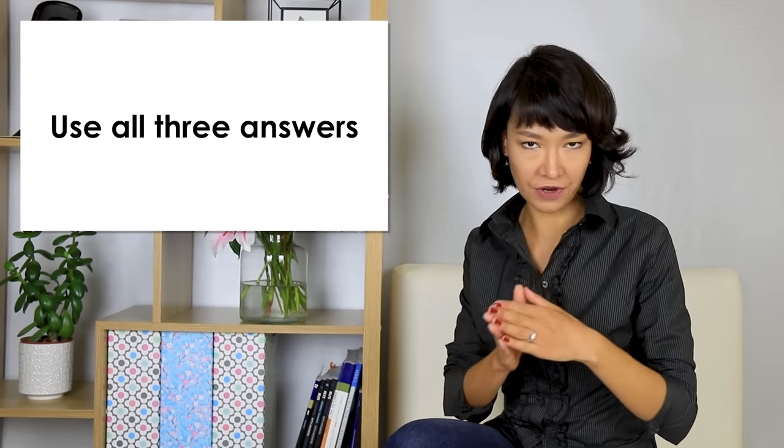Another tip: you will likely use all three answers. True false not given questions usually come in sets of four or five questions, sometimes up to nine. It seems that at least one will be true, one will be false, and one will be not given. In the last test I took I had six questions — two were true, two were false, two were not given. Of course I can't guarantee the same distribution, but there is a good probability that you will use all three answers.